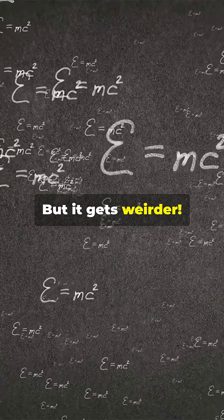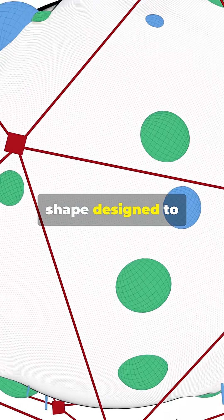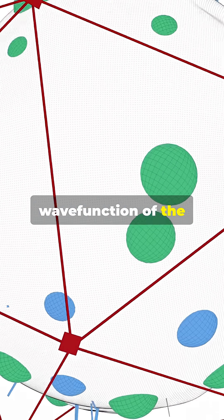But it gets weirder. There's the cosmohedron, a three-dimensional shape designed to represent the quantum wave function of the entire universe.